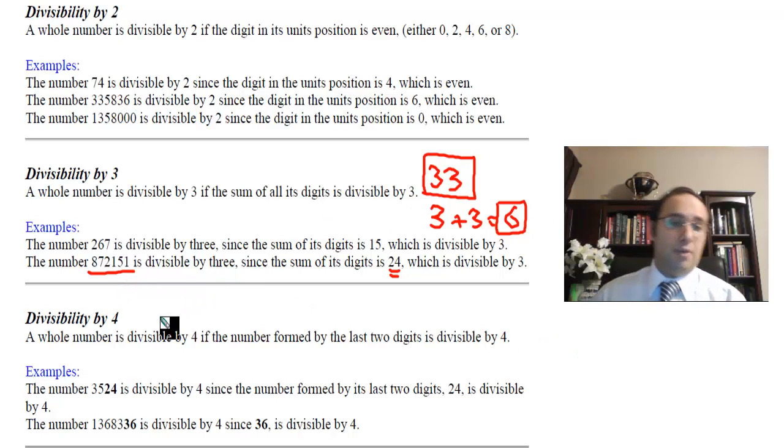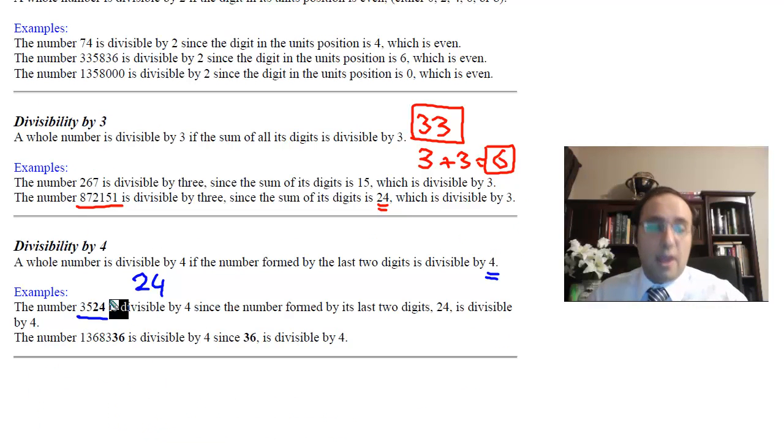Now let's take a look at divisibility by 4. A whole number is divisible by 4 if the number formed by the last two digits is divisible by 4. So we look at the last two digits only. If this number, the two-digit number at the end, is divisible by 4, then this whole number is divisible by 4. So let's take an example like here, 3,524. I just look at the last two, which is 2 and 4. Is the number 24 divisible by 4? Yes, it is. The number 24 is divisible by 4. 6 times 4 equals 24. Therefore, 3,524 is divisible by 4 as well.